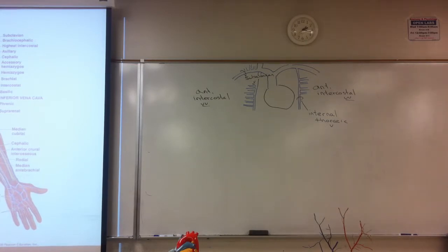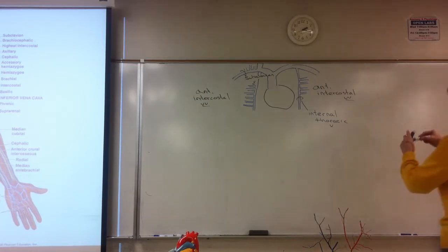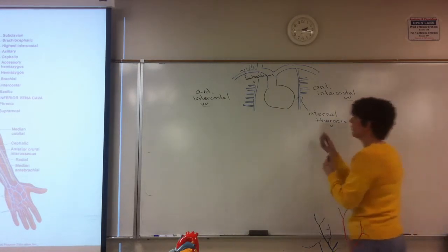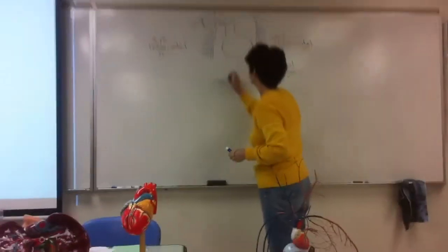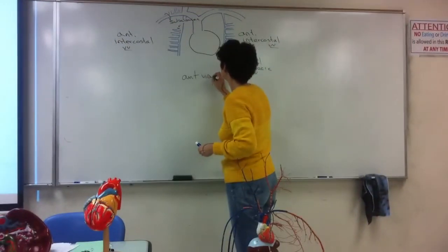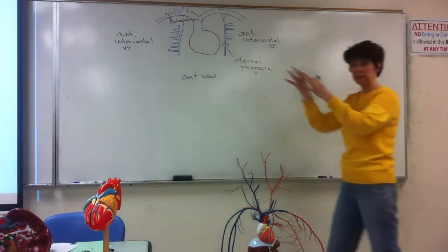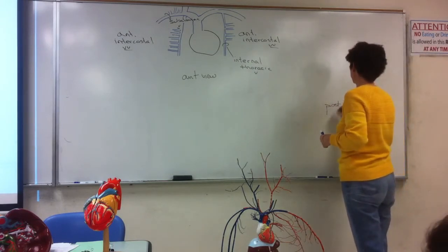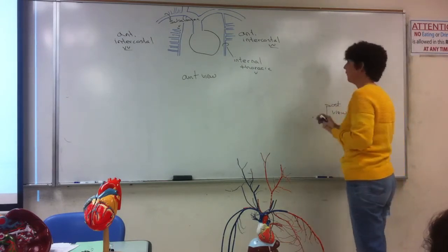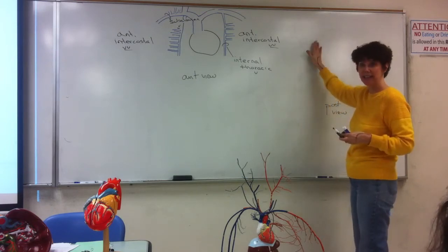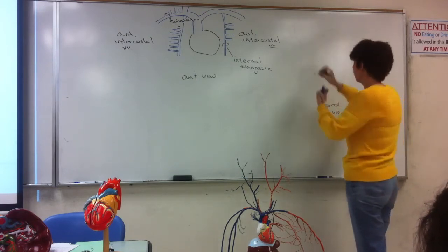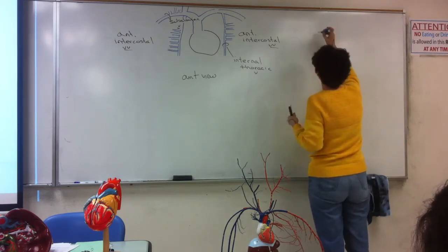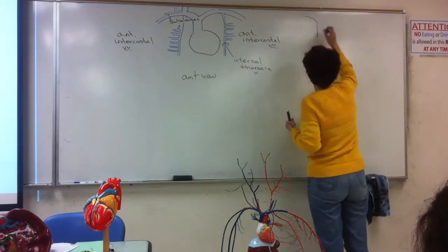I'm going to put over here on this side a similar drawing — this is the anterior view. I'm going to try to superimpose them like they're on that diagram. Here would be the posterior view — not from the back but through to the back. We'll look through the heart, so here's the superior vena cava again.